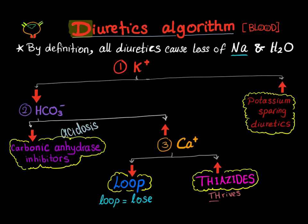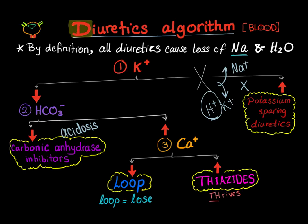What about potassium-sparing diuretics? These diuretics inhibit aldosterone. Aldosterone causes reabsorption of sodium and excretion of potassium and hydrogen ions — that secretion of hydrogen is alkalosis. When I block aldosterone, aldosterone normally leads to absorption of sodium and secretion of hydrogen ions, which are acidic — so the loss of acid is alkalosis under aldosterone. When I block the aldosterone, I get acidosis. So potassium-sparing diuretics will lead to acidosis.